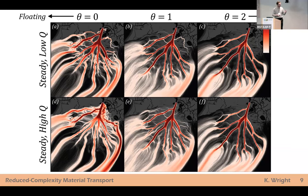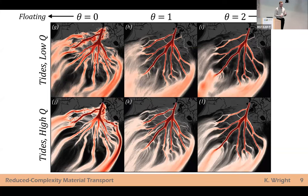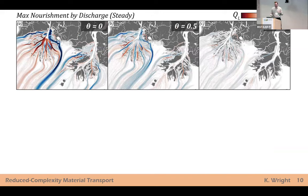For each simulation we can compute this nourishment area for every environmental condition and every pseudo-material with this theta parameter. Here I'm showing six examples, and you can see this picture is changing qualitatively. There are interesting trends you can visualize by changing one or more variables. Because this is a quantitative approach, we can directly stack nourishment maps on top of each other and take differences to see which regions are relatively receiving more material in different circumstances — for example, how nourishment changes as a function of discharge from low to high for three pseudo-materials.